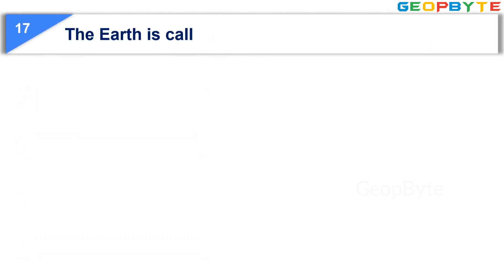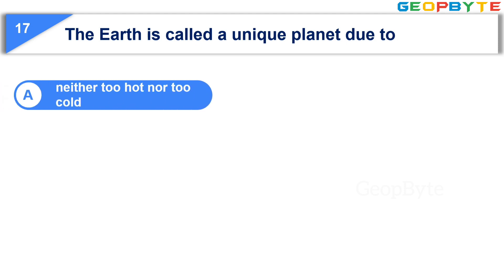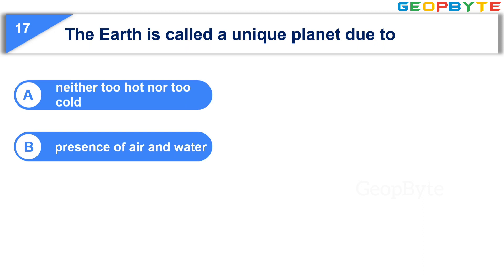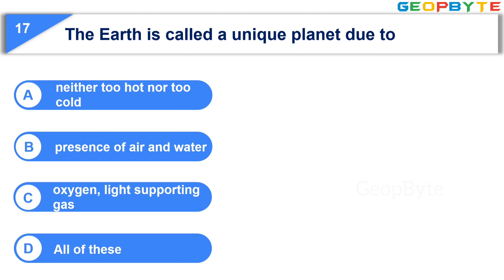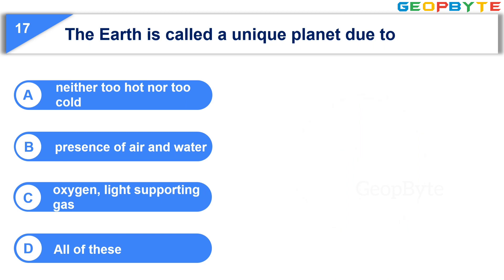The 17th question is: The Earth is called a unique planet due to — Option A: Neither too hot nor too cold. Option B: Presence of air and water. Option C: Oxygen, a life-supporting gas. Option D: All of these. Your time starts now. Your time is up and the correct answer is Option D: All of these — neither too hot nor too cold, presence of air and water, and oxygen, a life-supporting gas.